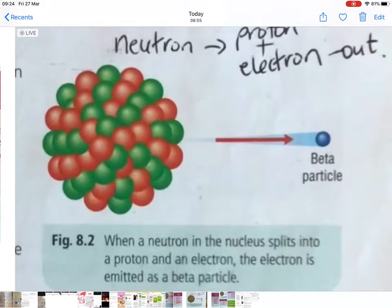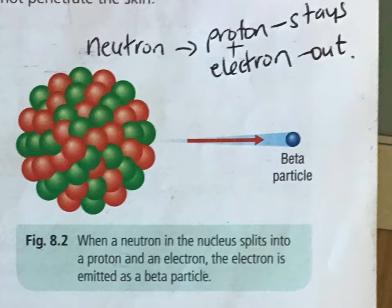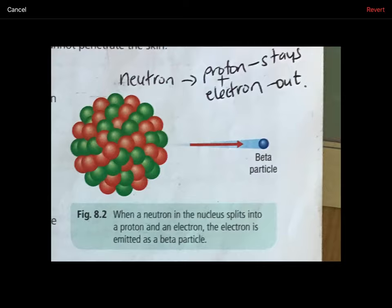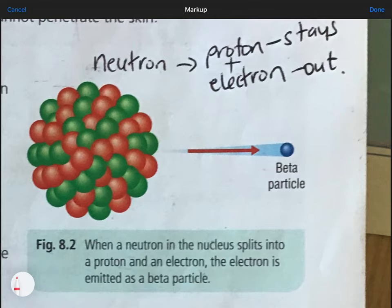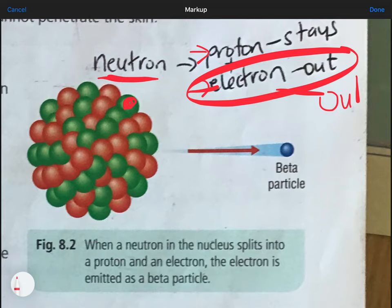The next type of particle that might be emitted from an unstable nucleus is beta. With beta emission, changes are occurring within the nucleus. What happens is that a neutron, which is one of the greens, splits or changes to a proton and an electron. The electron flies out of the nucleus. High-speed electron is essentially what the beta particle is. The proton stays. It's important to remember that the proton stays.